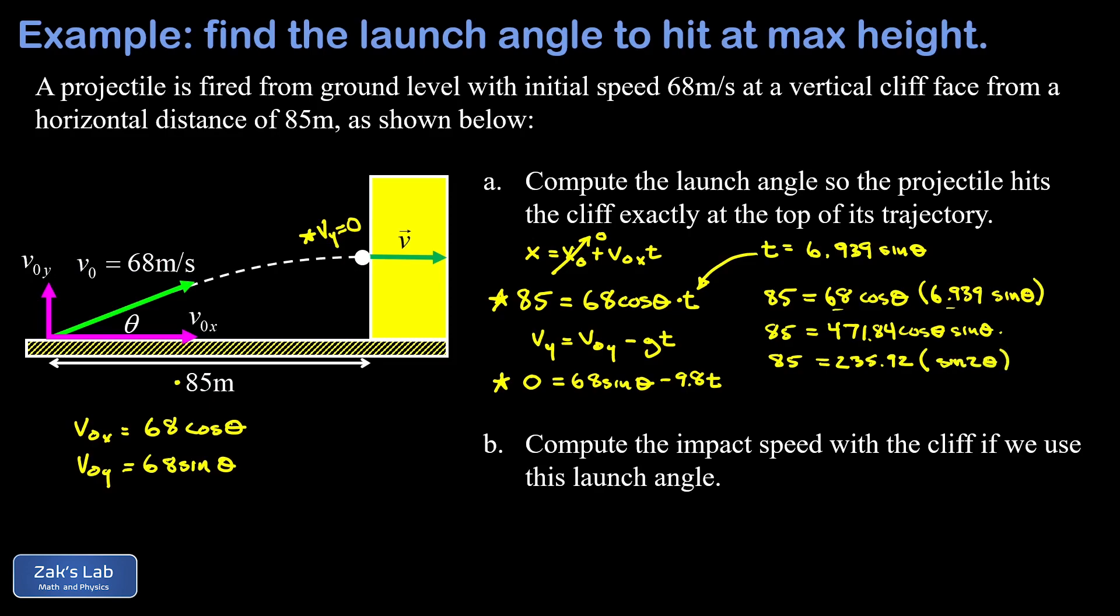Now we can solve for the sine of 2 theta by dividing by 235.92. That gives us sine of 2 theta is 0.3603. So 2 theta is the angle whose sine is 0.3603, and that gives us 21.12 degrees. Finally, all we have to do is divide by 2 and we have our launch angle, and to three significant digits this comes out to 10.6 degrees.